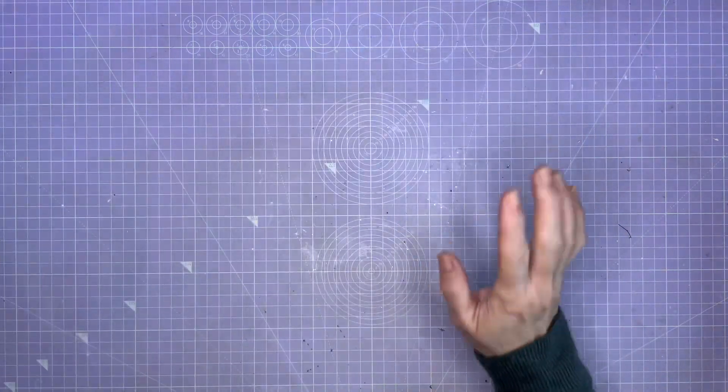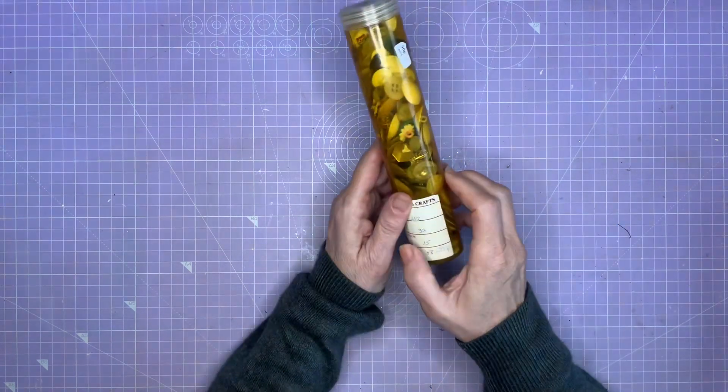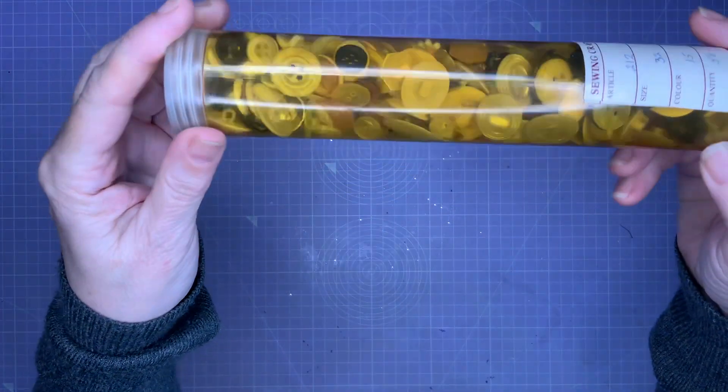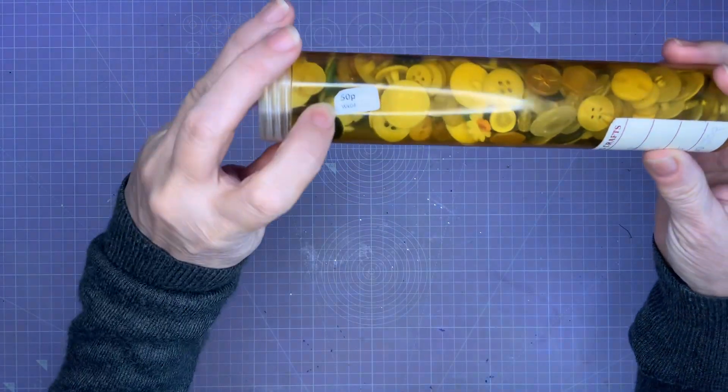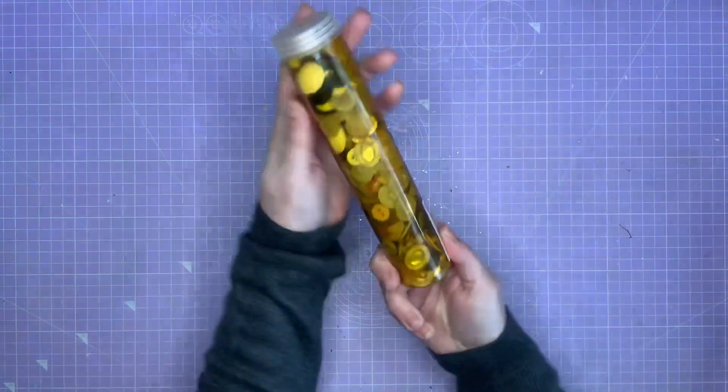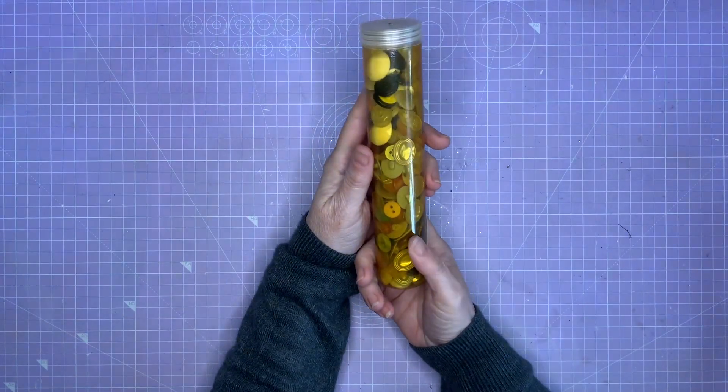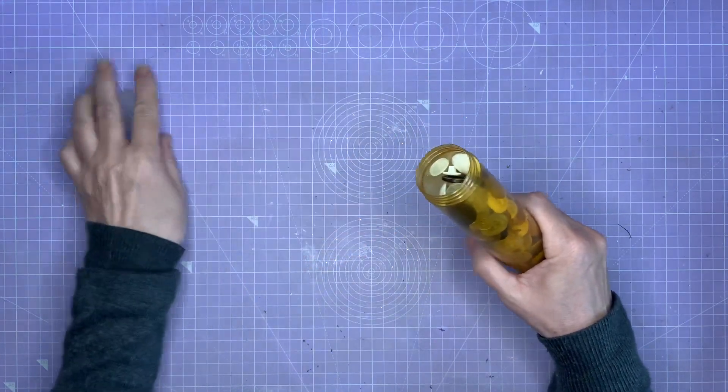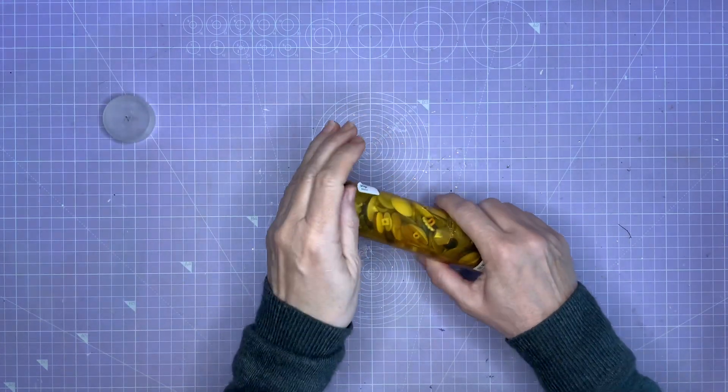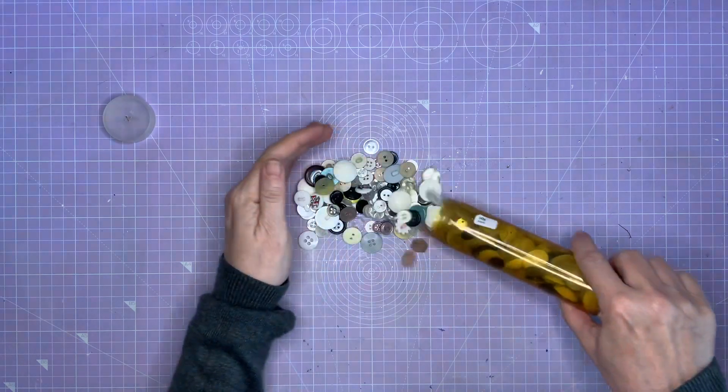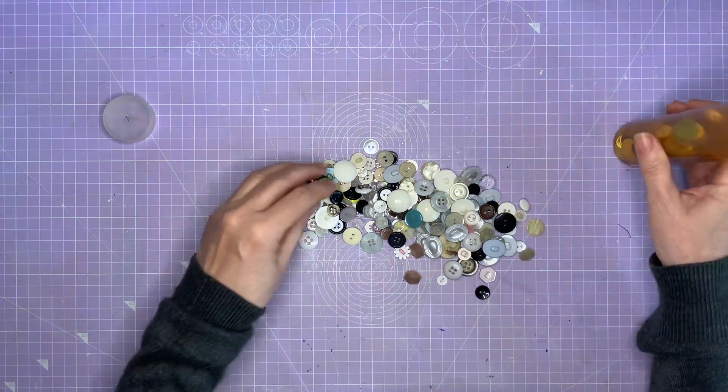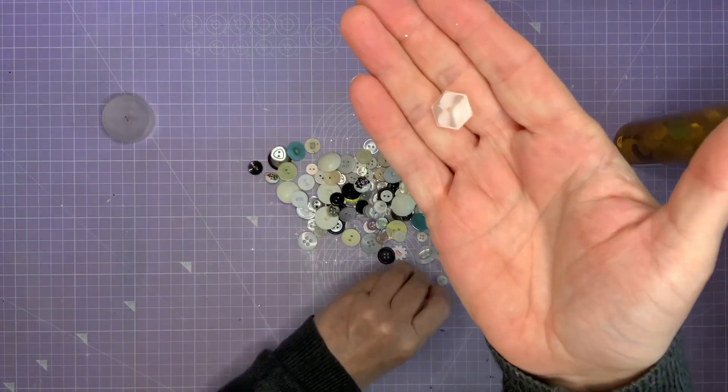Right let's move on and go back to thrift store finds. I didn't know whether to say buys or finds. Now I got this tub of buttons. If I turn it round there, 50p for all those buttons. So I was very pleased with that. Let's open them up and have a little look at some of them.